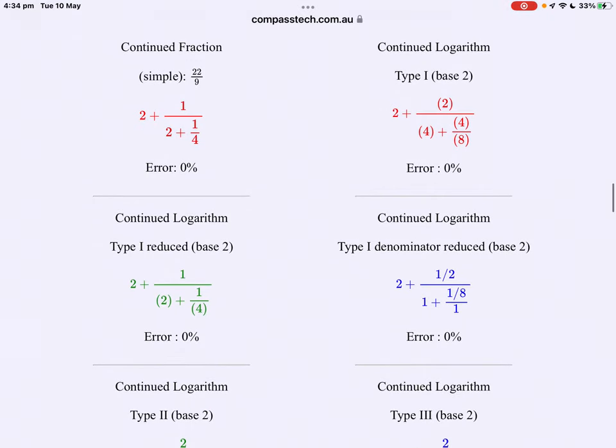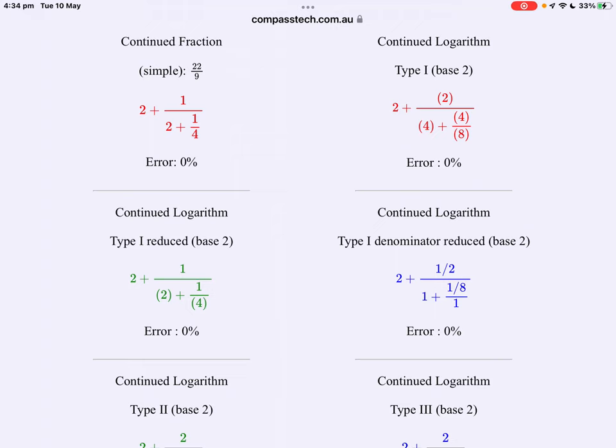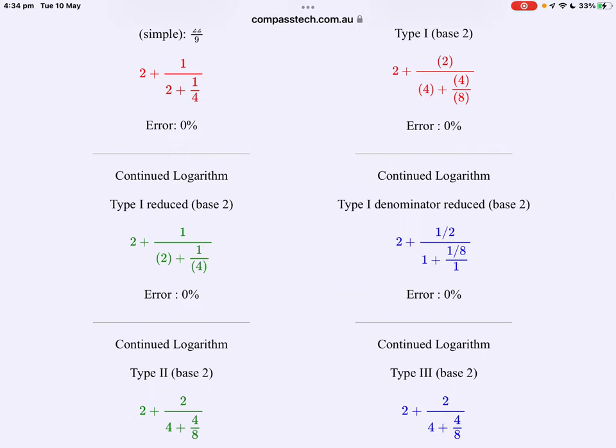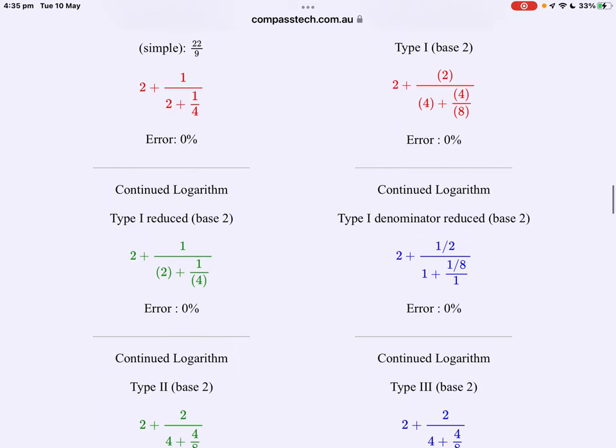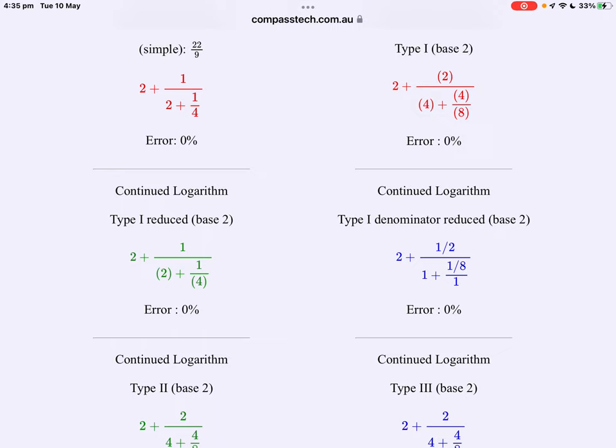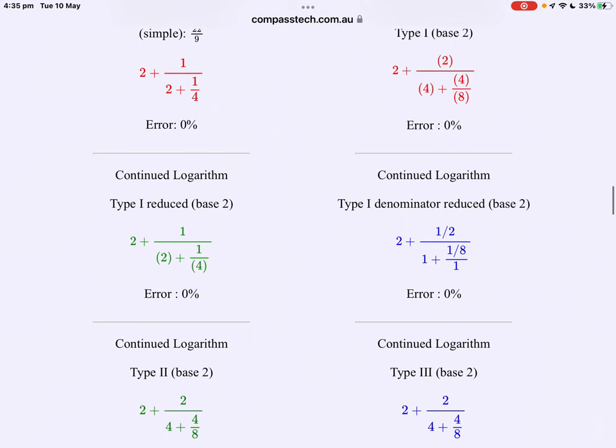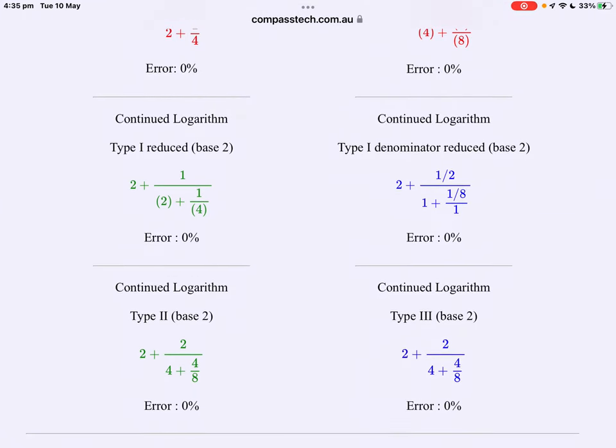They realized that Gosper's idea could be applied to more than just the binary case, more than just base two. What we see here are a range of different continued fraction forms for the same number, 22 over nine. The simple continued fraction form first, but now what have been labeled type one, there are three variations on the type one continued logarithm. And then two newer versions, type two and type three.